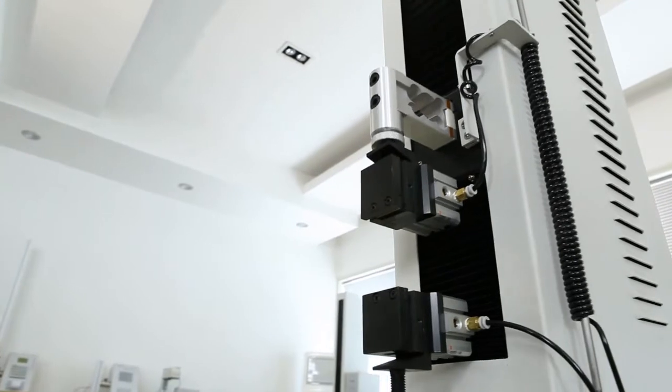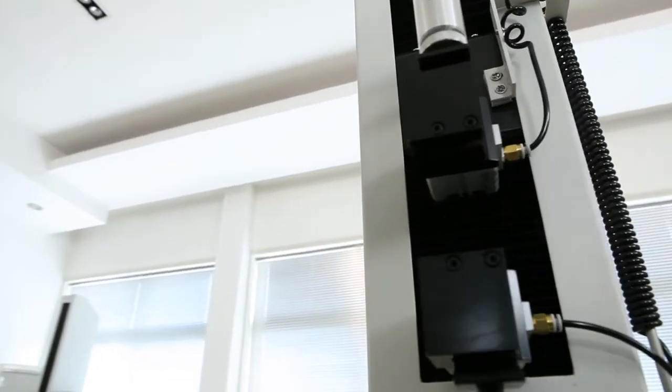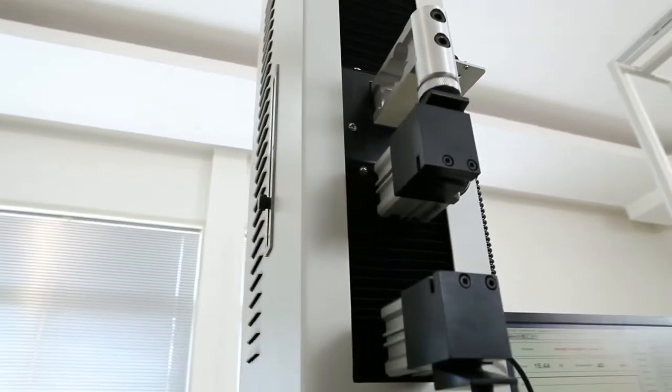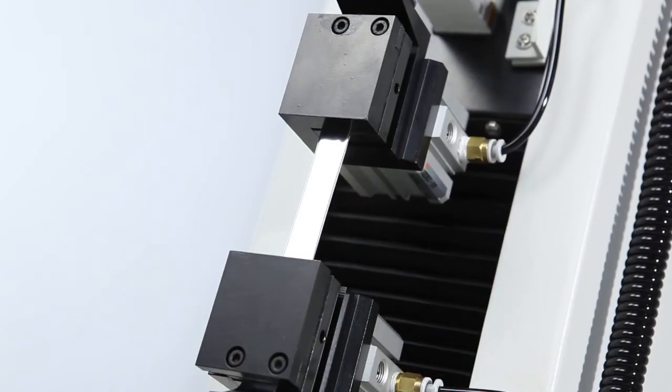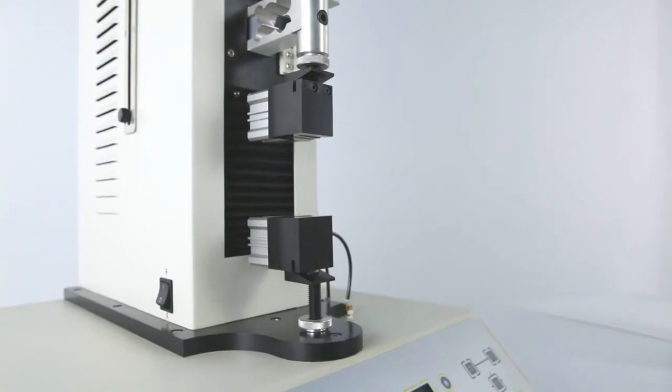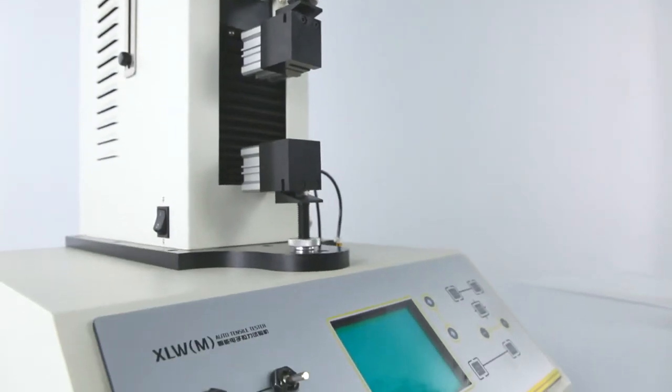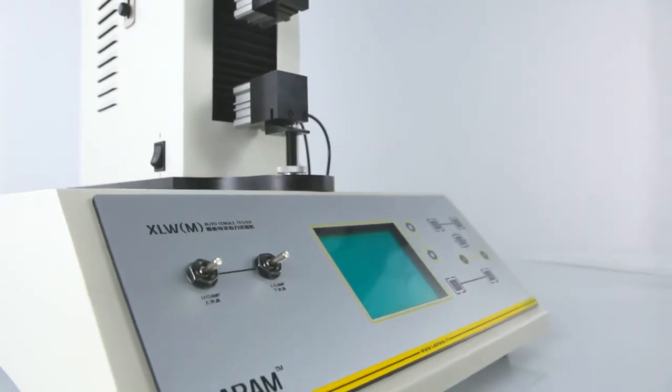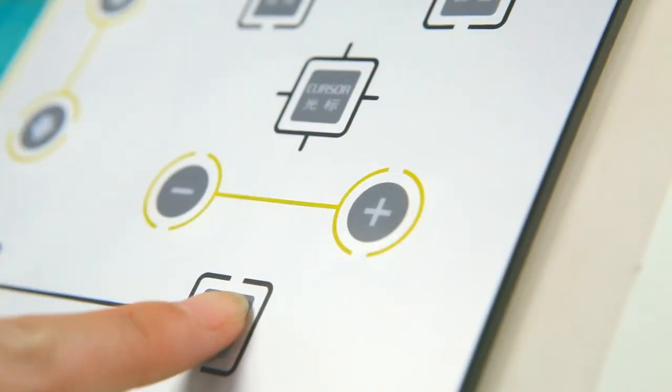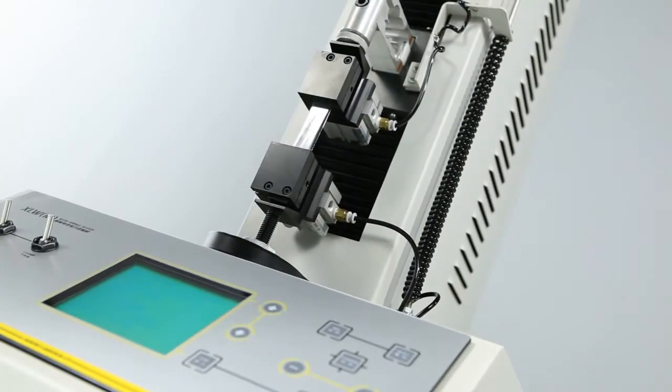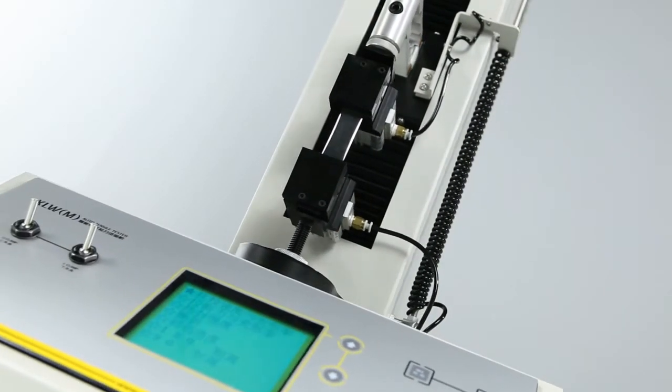The use of pneumatic clamps improves the automation of the instrument and test efficiency, while greatly reducing sample damage caused by manual clamping operation. The LCD display, PVC operation panel, and mini printer integrated with the tester allow users to operate tests without computers, improving operational flexibility and adaptability.